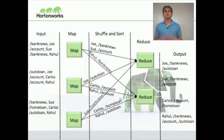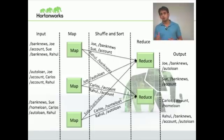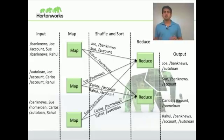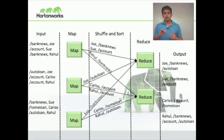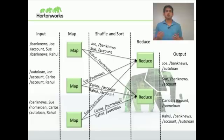Going back to the MapReduce data flow, your input has the URL and the username as the key and values. Your map will just flip them around, making the username the key and the URL the value. Once they get sorted by username — like Joe or Rahul — the reducers will see the username followed by a list of URLs visited. Your application is very straightforward; you're essentially just flipping keys and values. All the hard work — scheduling your maps, scheduling your reducers, doing the aggregation which is essentially a large distributed sort, and feeding it to your reducers — is done by the MapReduce framework for you.